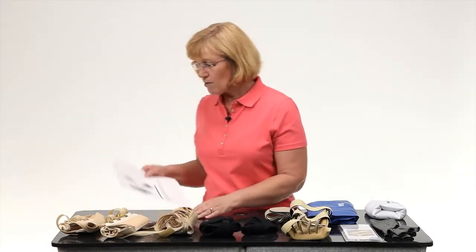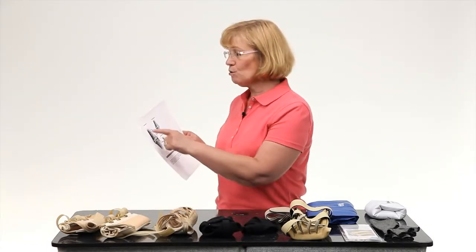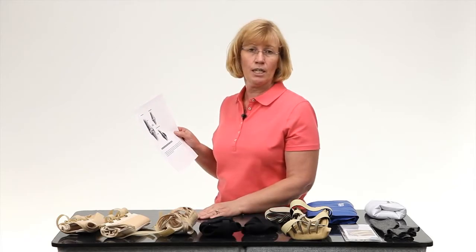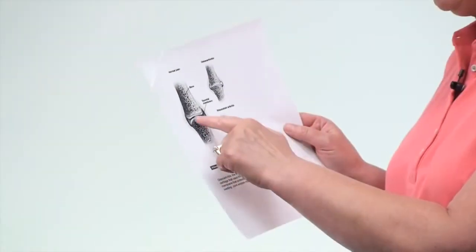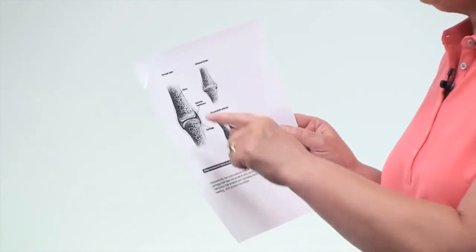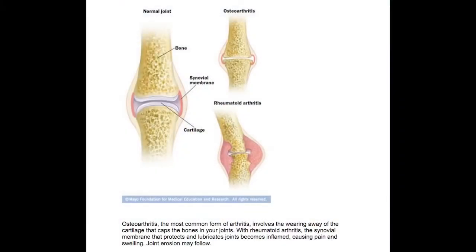I have a handout here. It shows a normal joint on the left side. What you see are two bones with cartilage between them. The joint is covered in synovial fluid, which is very viscous — a thick liquid. I like to compare it to oil in a car: it keeps everything very lubricated.